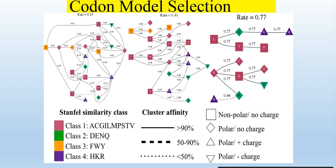In the codon model selection analysis we will get a figure which shows the amino acids and their cluster affinity and nature. Amino acids of the same color are presented in the same class. Class 1 contains A, C, G, I, L, M, P, S, T, V; class 2 contains D, E, N, Q; class 3 contains H, W, Y; and class 4 contains H, K, R.